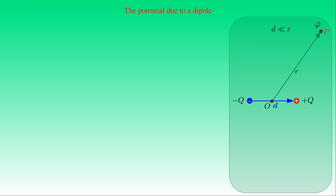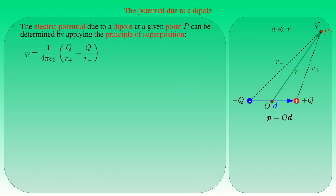We can determine the electric potential due to a dipole in the region far from it, computing φ at point P at distance R from midpoint O of the dipole, where R is much greater than the distance D between charges −Q and +Q. The electric dipole moment P is given by Q times the vector D pointing from the negative to the positive charge. By superposition, φ at P equals (1/4πε₀) × (Q/R₊ − Q/R₋), where R₊ and R₋ are the distances of +Q and −Q from P.